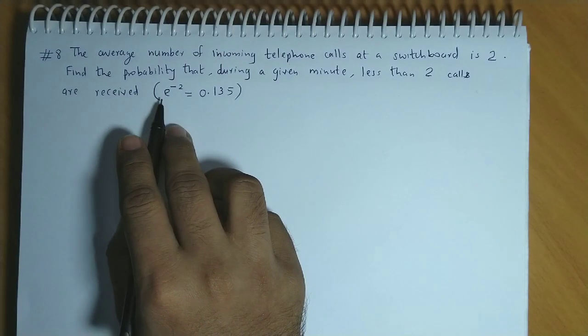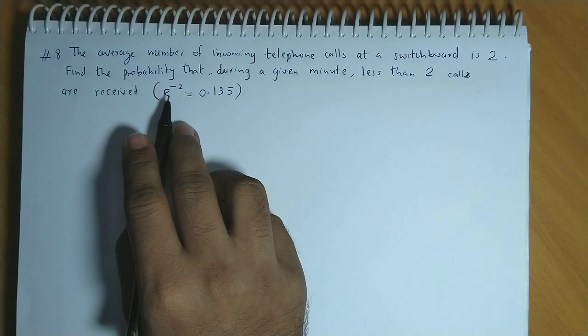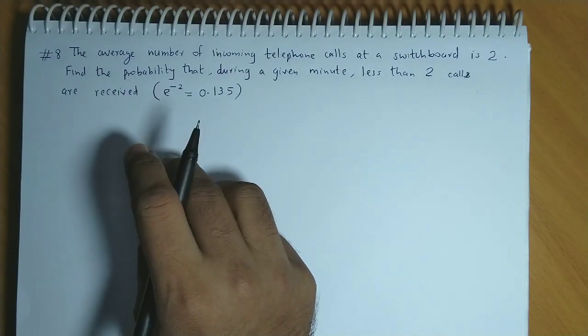Also here is a hint that we have value in this bracket e raised to minus 2. So here is a hint that we need to use Poisson distribution.